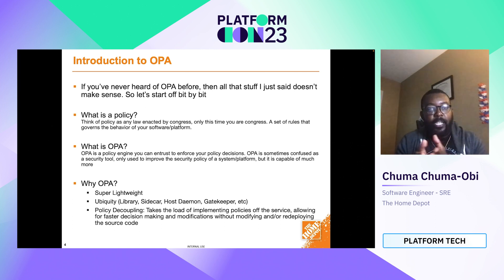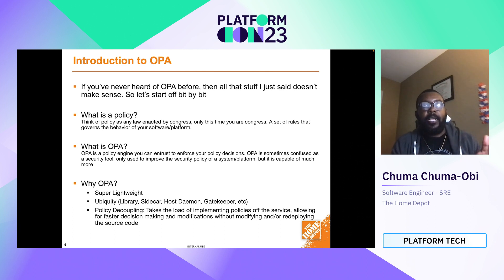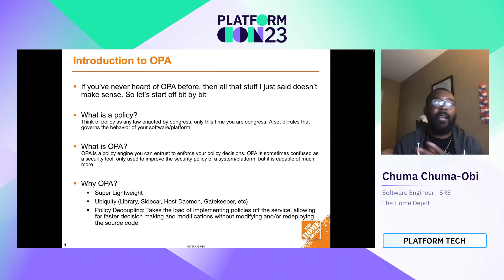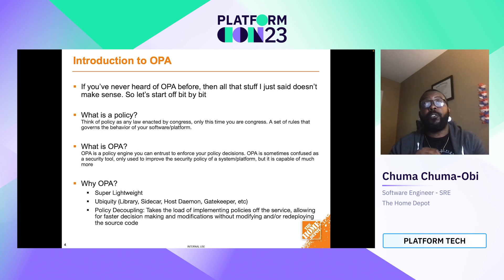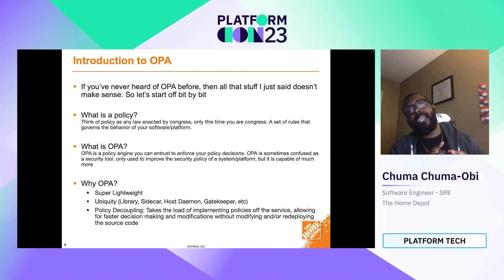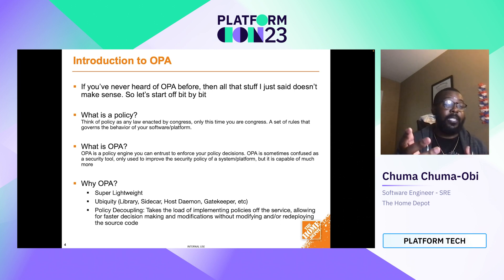What is a policy? A policy is a set of rules — like any law enacted by Congress or any housing regulation you're familiar with. As a developer, you are Congress. You have a set of rules that govern behavior for your platform or software. OPA is a policy engine you can entrust to implement and enforce those policy decisions for you. OPA is often confused as a security tool. While it's definitely used to improve security, as you'll see in this demo, it's capable of so much more.